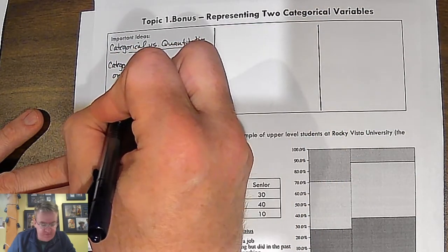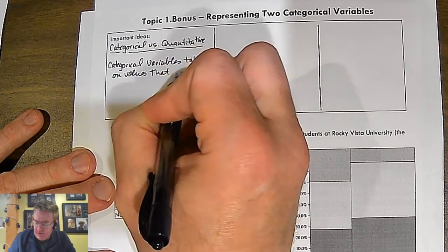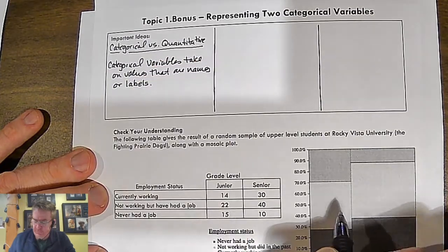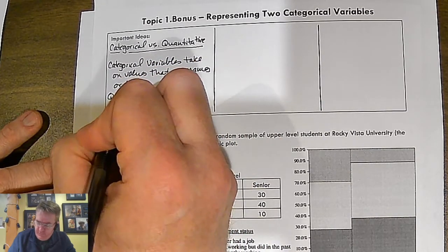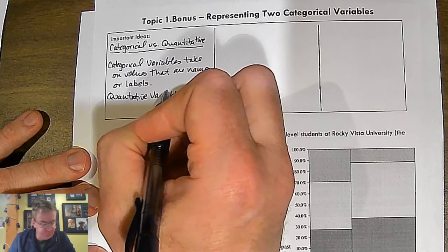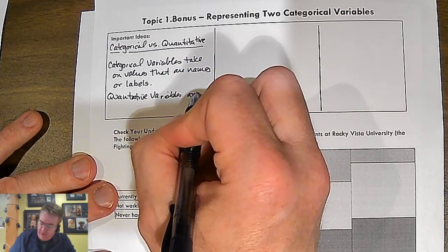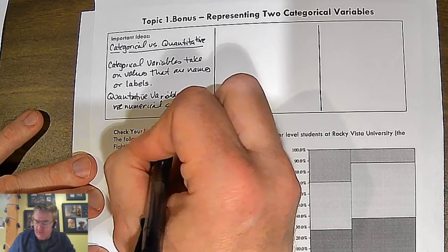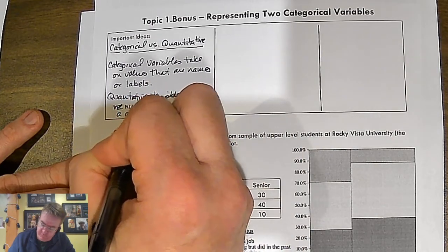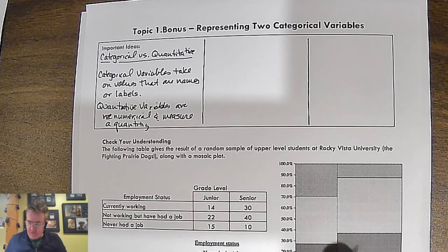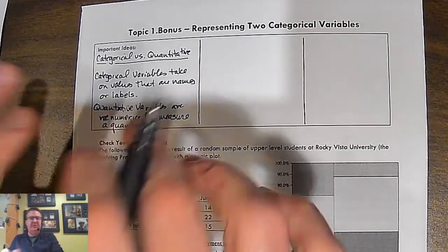Take on values that are names or labels. Quantitative variables are numerical and measure a quantity. Is that readable? I think so. So those are the two differences we talked about yesterday. We now have it down. If you get stuck, you can look it up in your notes.